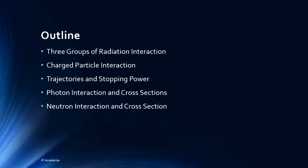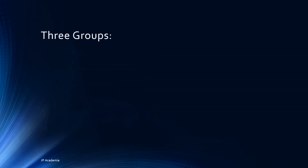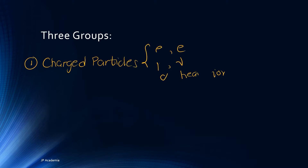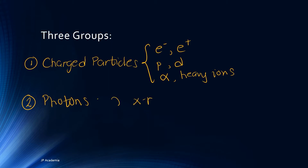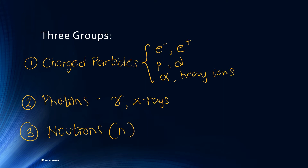This is the outline of this video lecture. In discussing radiation interactions with matter, we can generally divide it into three groups. First, we have charged particles, which include electron, positron, proton, deuteron, alpha, and heavy ions. Second group is photons, which includes X-rays and gamma rays. Third, we have neutrons. This classification is created because each group has its own characteristic in terms of energy deposition and scattering.